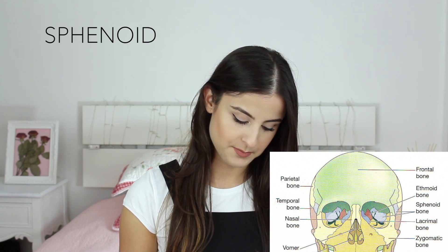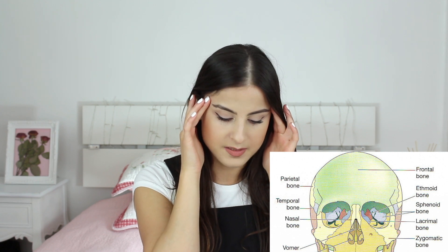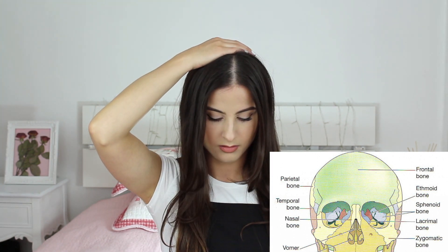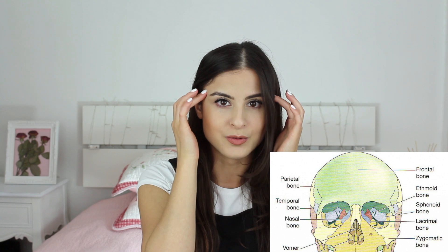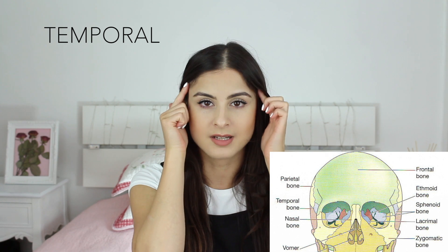The next one is sphenoid — it's the bone at the back of the eye socket and the middle of the cranium, so it's behind your eyes and in the middle. After that is temporal — just like your temporalis muscle, which you can feel if you clench your teeth. The temporal bone is on the side of your skull.